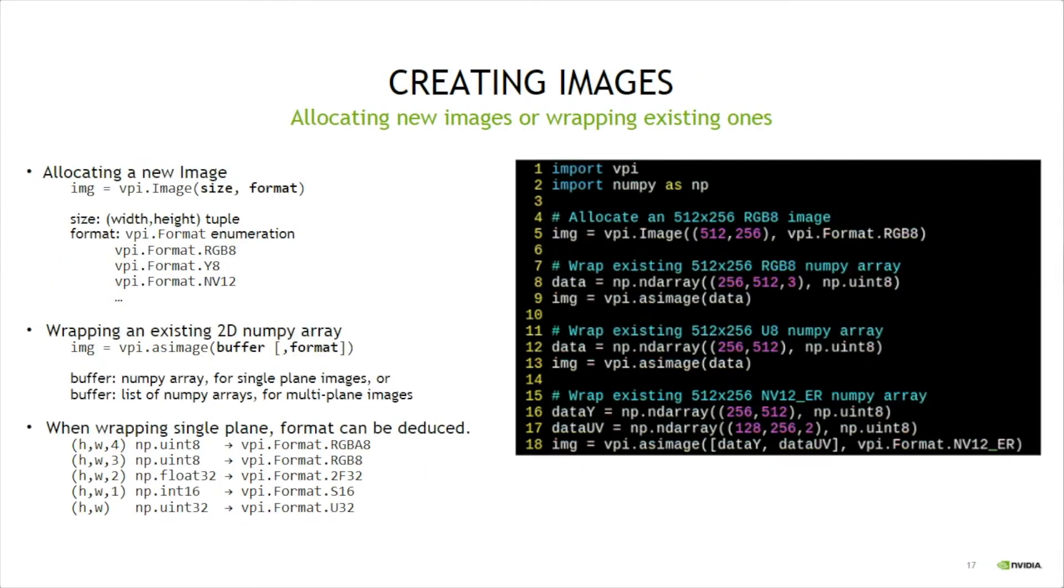Let's see some details on how to create VPI images. New images can be created either by allocating a new one with undefined contents, or by wrapping an existing NumPy array. Allocating is quite easy, as shown in line 5 in the script. You just pass the image dimensions as width and height tuple, and then the image format, in this case RGB8.